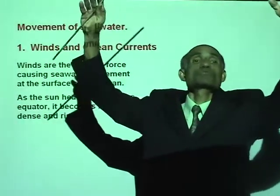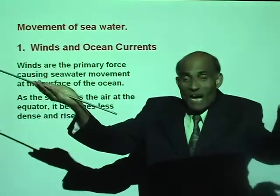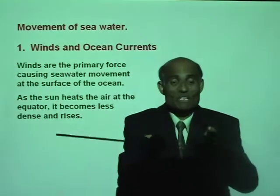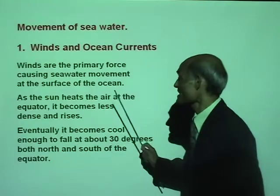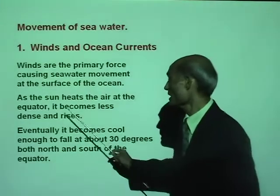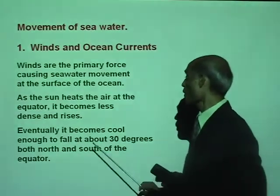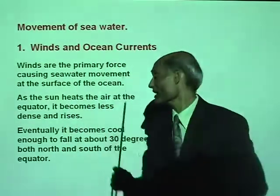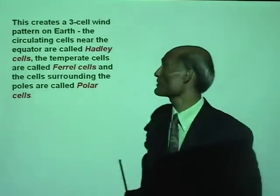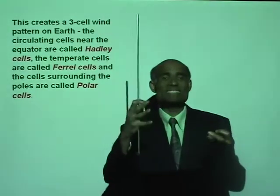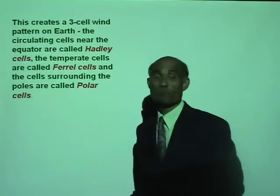At about 30 degrees north and 30 degrees south, the air sinks and gets drawn back to the equator. This creates a three-cell wind pattern. The three main cells of wind patterns are called Hadley cells, Ferrel cells, and polar cells.